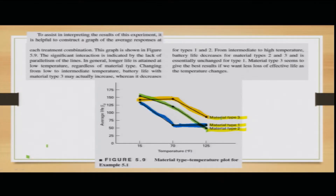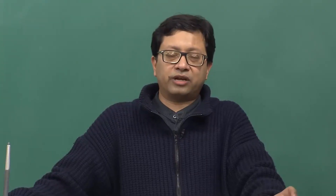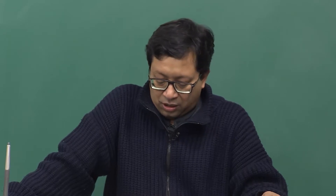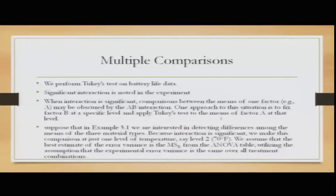Material type 3 seems to give the best results if we want the least loss of effective battery life as temperature changes, so we would use material type 3. Now we consider multiple comparisons using Tukey's test on the battery life data. When interaction is significant, comparisons between the means of one factor may be obscured by the interaction. One approach is to fix factor B at a certain level and apply Tukey's test to the means of factor A at that level.